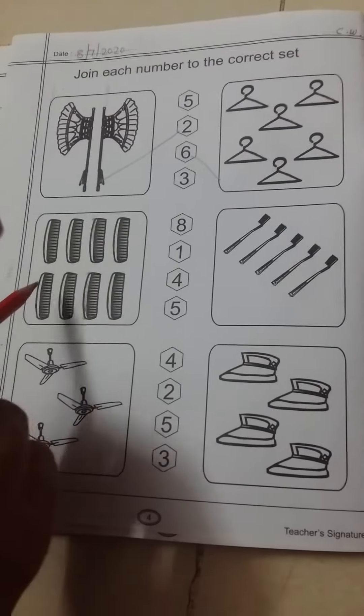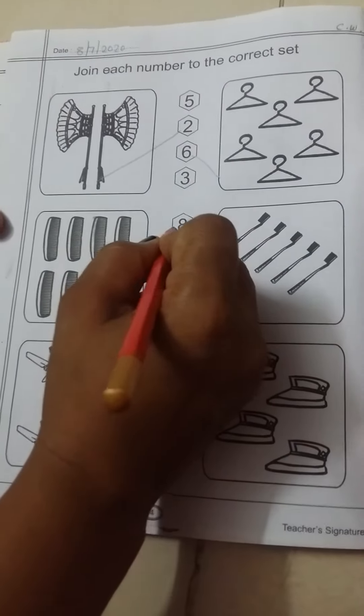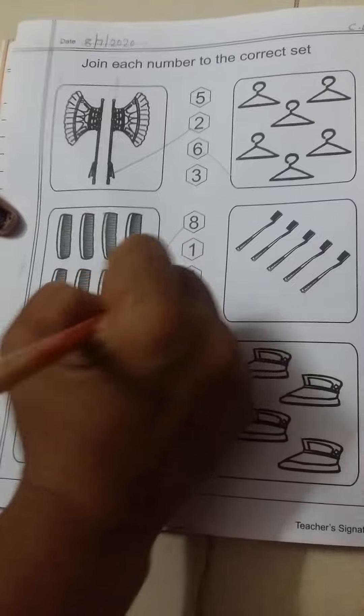One, two, three, four, five, six, seven, eight. Join. Next.